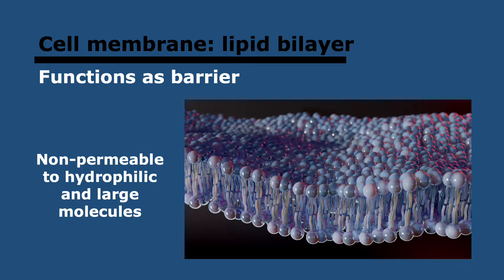Membranes also allow for organelles, which can have different functions within the cell, to exist. Organelles also have a plasma membrane around them. The phospholipid bilayer is made of a phosphate head and two hydrocarbon tails, and it allows for low permeability to hydrophilic molecules such as glucose and also very large molecules. So both hydrophilicity/hydrophobicity and molecular size determine permeability.